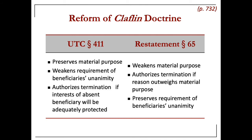The UTC preserves the material purpose rule from traditional law, but it allows for less than unanimous beneficiary consent. So if you remember the previous rule, there must no longer be a material purpose and all beneficiaries must consent. The UTC weakens that requirement and also authorizes termination if the interests of absent beneficiaries will be adequately protected — and absent beneficiaries could be those not yet born.